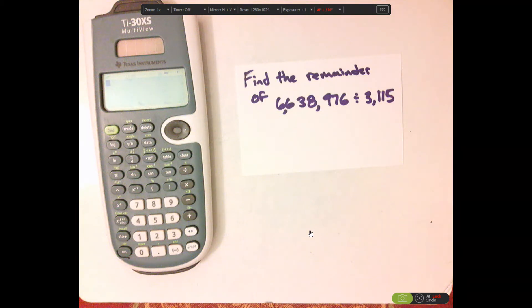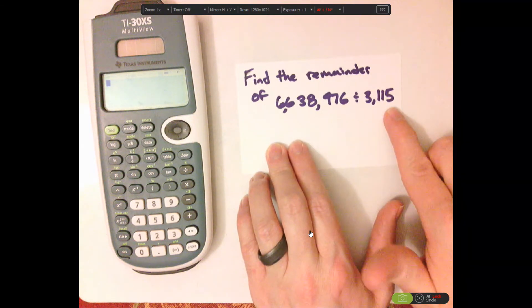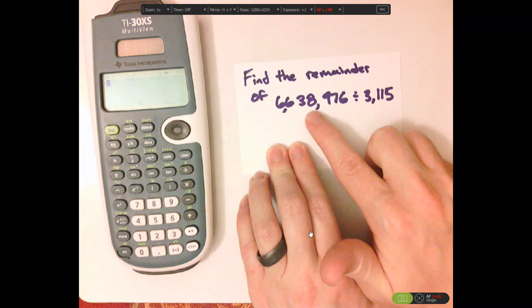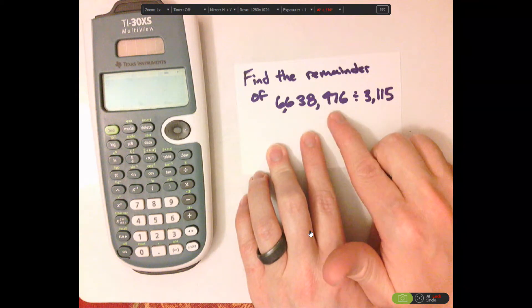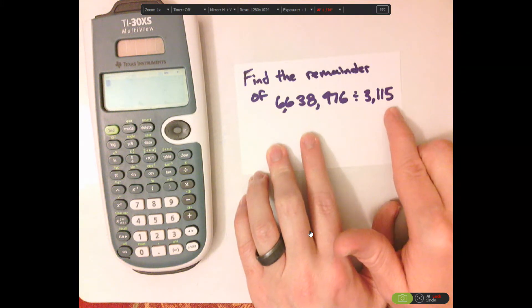Hi, I'm JD, and what we're going to be doing today is finding the remainder of this: 6,638,976 divided by 3,115.